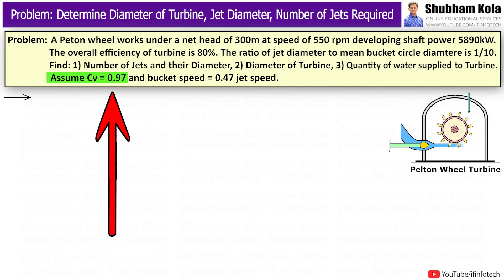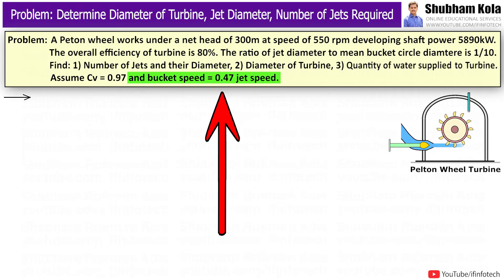Assume coefficient of velocity CV equals 0.97 and bucket speed equals 0.47 jet speed.